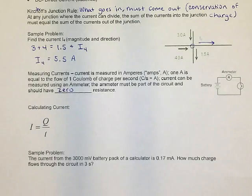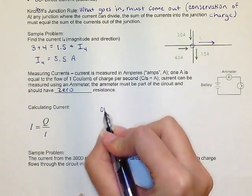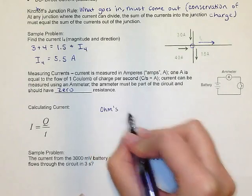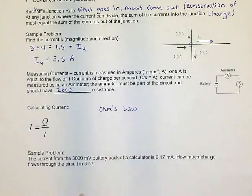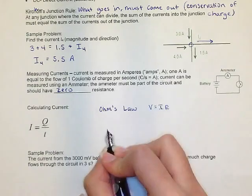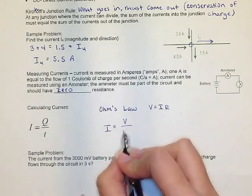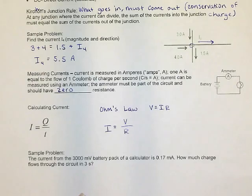So the formula for current, as we said, it's equal to the number of coulombs that pass by a circuit at a certain point each second. More practically, we also look at current in terms of Ohm's law, which we mentioned in our resistance and resistivity notes. So Ohm's law says that V is equal to I times R, or rather that current is equal to the ratio of voltage over resistance.